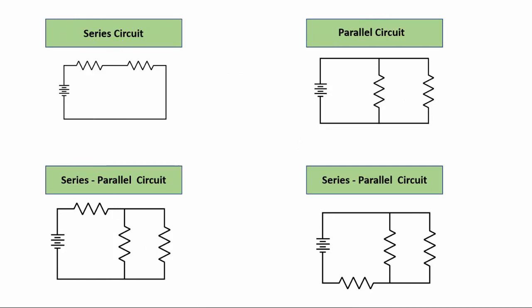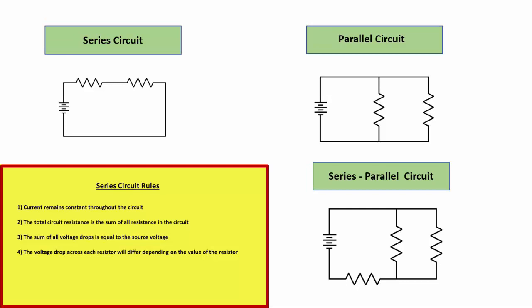When we apply Ohm's law to series circuits, we need to use series circuit rules. In a series circuit, current remains constant throughout the circuit. The second rule is that the total circuit resistance is the sum of all the resistance in the circuit. So if there are two resistors, whatever the values are, they would be added together to find the total resistance.